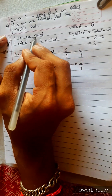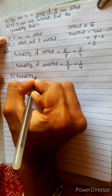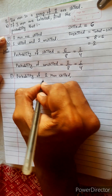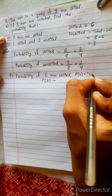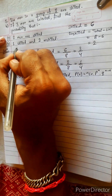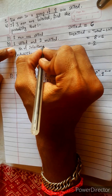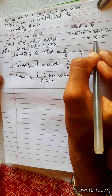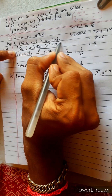Now, two men are skilled. Probability of two men skilled. It is given by P2. We know the formula: P(R) = NCR × P^R × Q^(N−R). Three men are selected, so the number of times the experiment is repeated — N equals three. We might think N equals eight, but it is not the total number of men. The total number of experiments conducted is three, so N equals three.